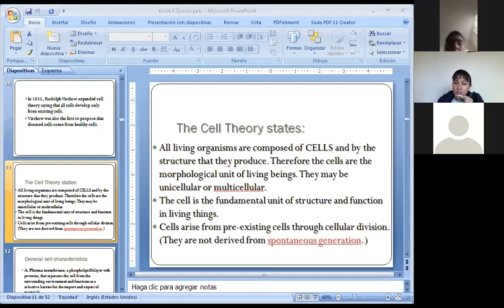All living organisms are composed of cells and by the structures that they produce. Therefore, the cells are the morphological unit of living beings and they might be unicellular or multicellular depending on how many cells they have. The cell is the fundamental unit of structure and function in living things and cells arise from pre-existing cells through cellular division.